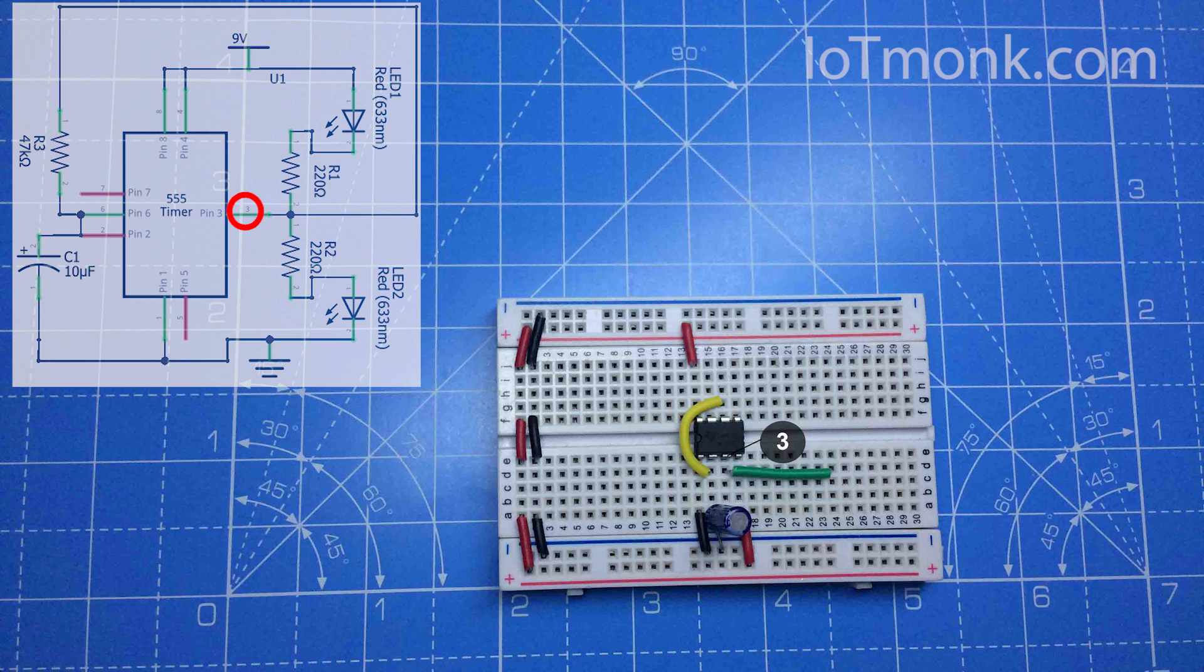Now connect a wire from pin number three and extend it on the breadboard just like this. We will connect LEDs later.